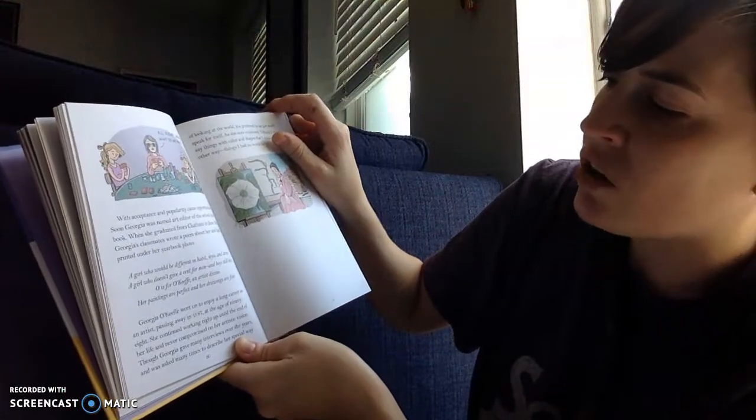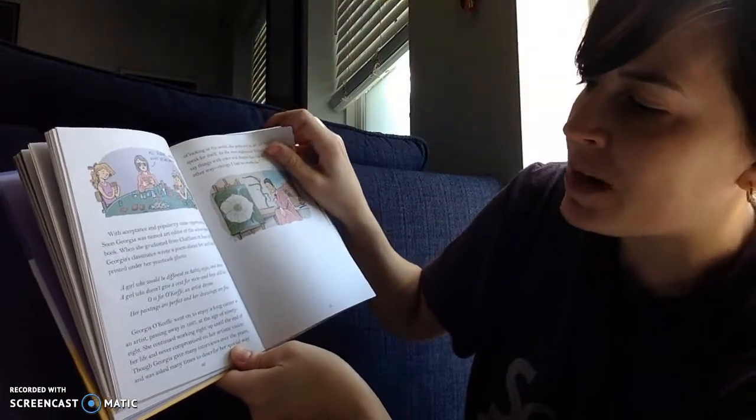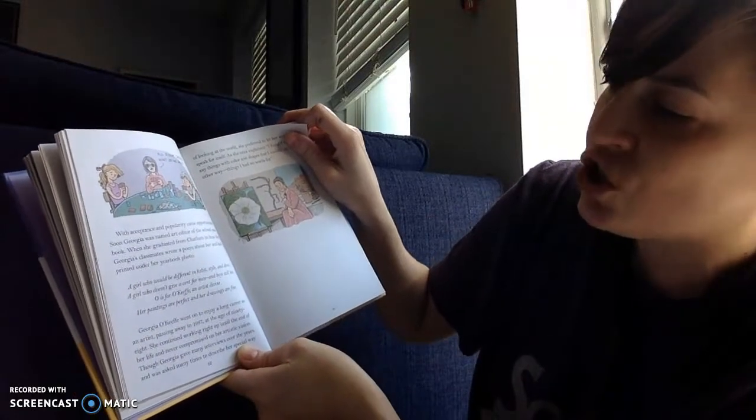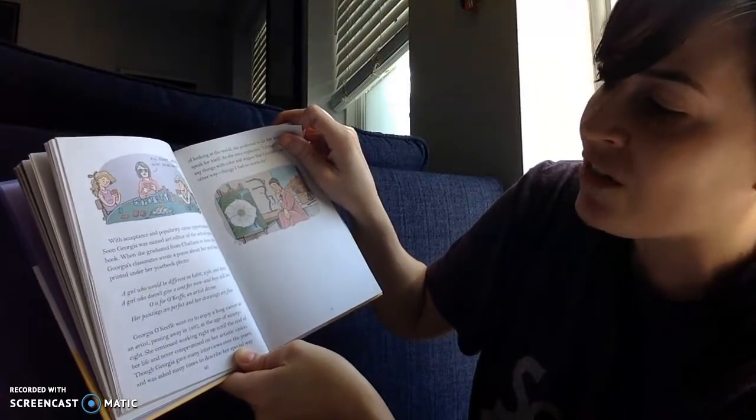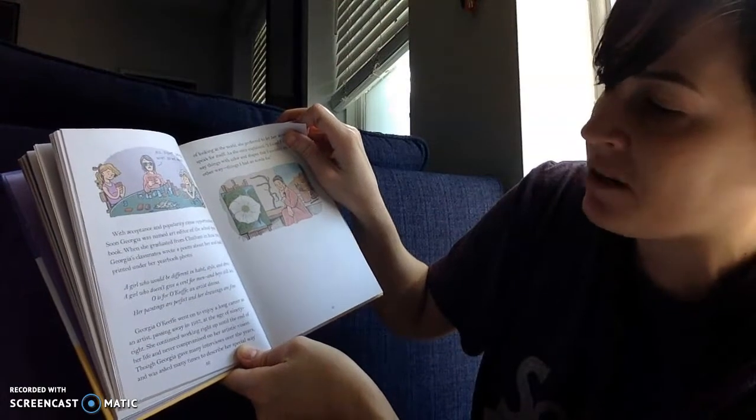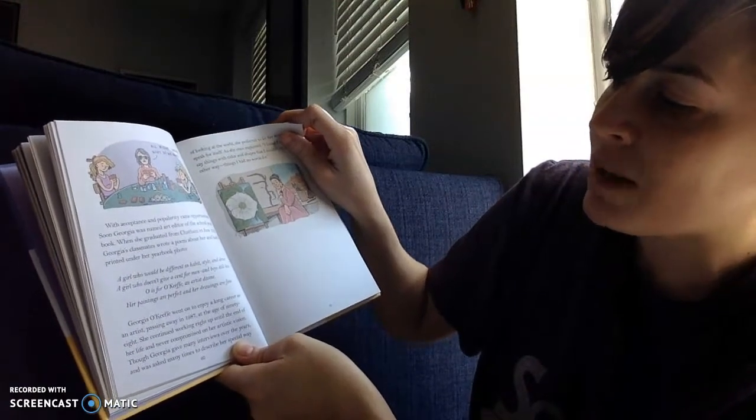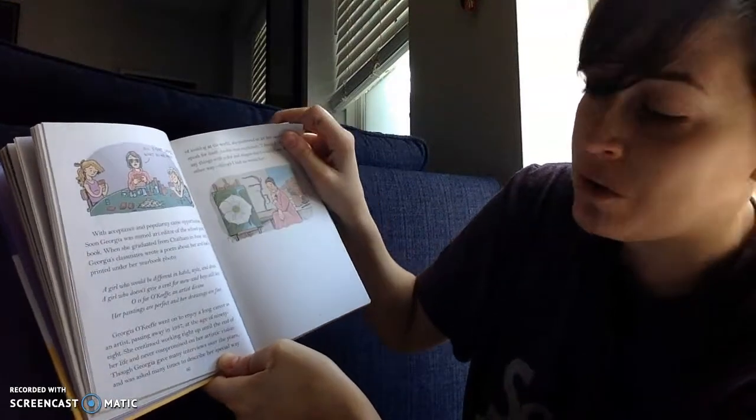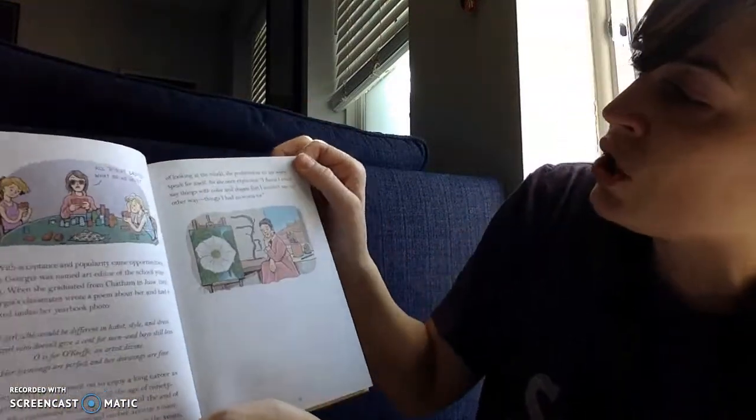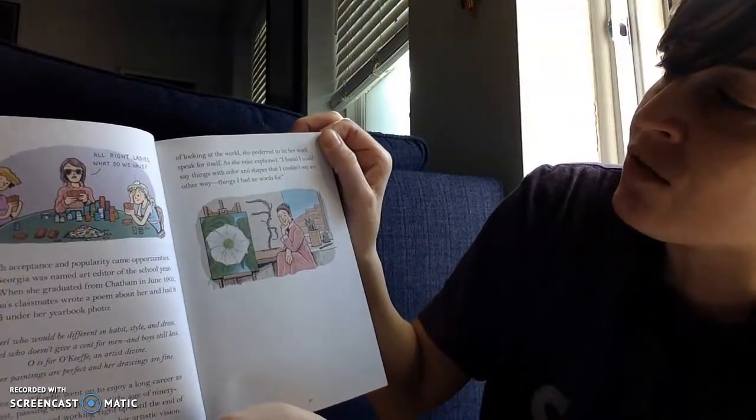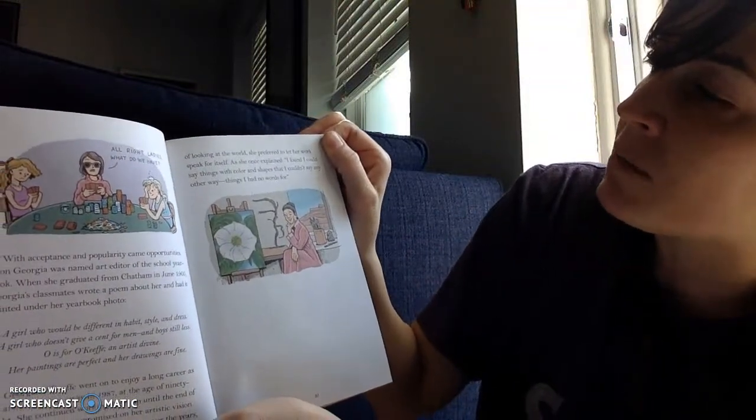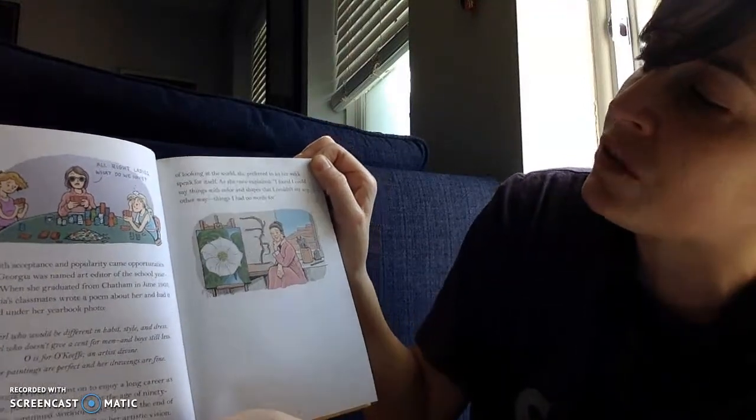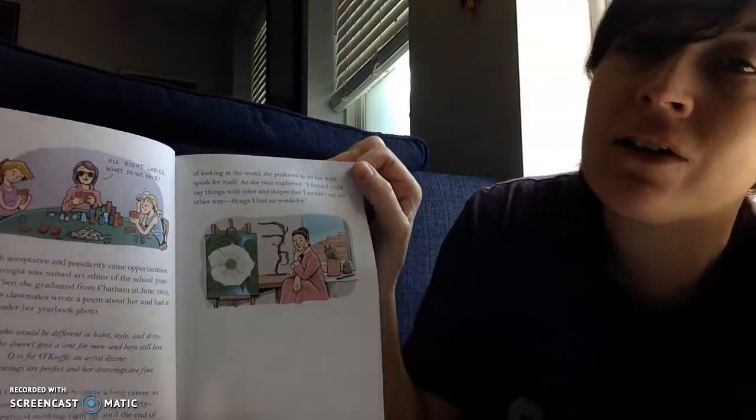Georgia O'Keeffe went on to enjoy a long career as an artist, passing away in 1987 at the age of 98. She continued working right up until the end of her life and never compromised on her artistic vision. Though Georgia gave many interviews over the years and was asked many times to describe her special way of looking at the world, she preferred to let her work speak for itself. As she once explained, I found I could say things with color and shapes that I couldn't say any other way. Things I had no words for.